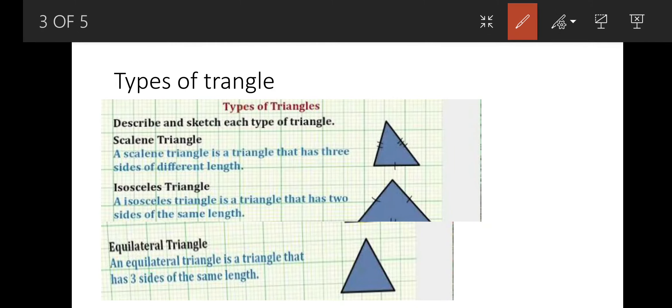So first, types of triangles: scalene, isosceles, and equilateral. Scalene triangle. A scalene triangle is a triangle that has three sides of different length, like 20, 30, and 40 centimeters. So it is S, scalene, short form.